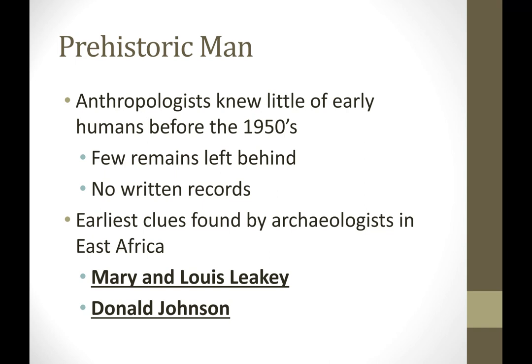We're going to begin by talking about prehistoric man. Prehistory is the era of human history before the invention and use of writing, so when we say prehistoric man, we're talking about man before writing. Very little was surprisingly known about humans or their earliest ancestors until really recently — the 1950s. The two sources that historians use to gain knowledge about the past are artifacts and written evidence. But prehistoric man couldn't leave behind written evidence because there's no writing, and they couldn't really leave behind many artifacts because there were very, very few of them.